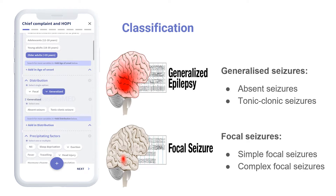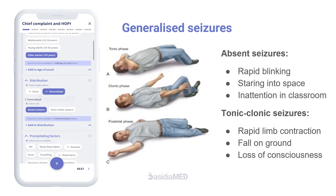Generalized seizures are categorized as absent seizures and tonic-clonic seizures. Absent seizures present as rapid blinking or a few seconds of staring into space; teachers often complain of inattention in children with absent seizures. Tonic-clonic seizures present as rapid contractions of the limbs, muscle jerks or spasms, fall on the ground, and loss of consciousness.